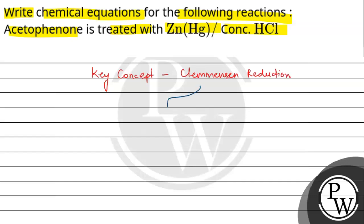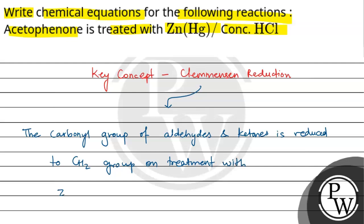Clemmensen reduction is basically when the carbonyl group of aldehydes and ketones is reduced to CH2 group on treatment with zinc amalgam and concentrated HCl.